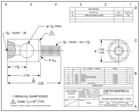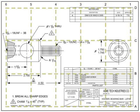Most drawings are broken out into zones using a simple alphanumeric grid. This grid is critical for large, complex drawings when discussing changes or details. The grid helps drafters and engineers pinpoint where information is located.